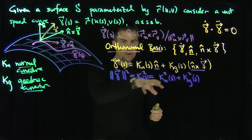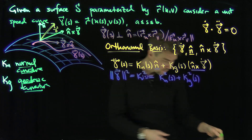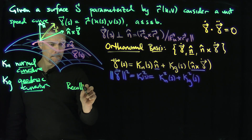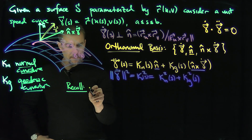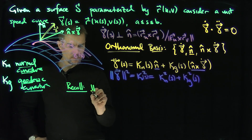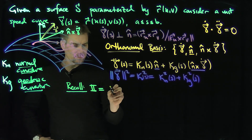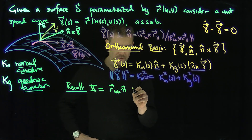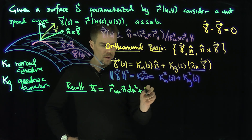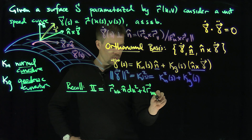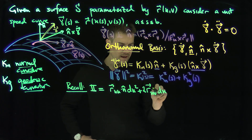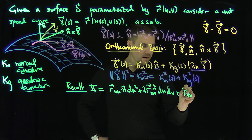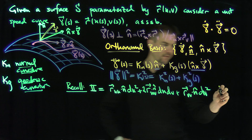Now we can connect this normal curvature with the second fundamental form. Recall that the second fundamental form is: R_UU · N-hat du², plus 2 R_UV · N-hat du dv, plus R_VV · N-hat dv². That's the second fundamental form.